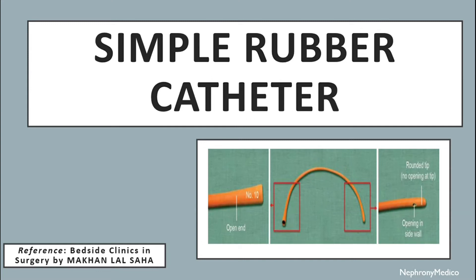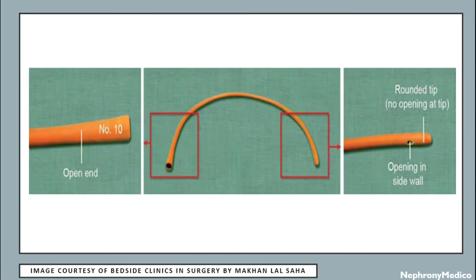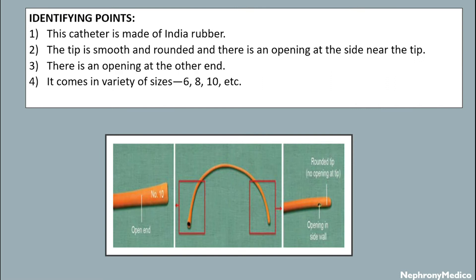Hello and welcome. Let's talk about the simple rubber catheter. This is a picture showing a simple rubber catheter and its identifying points. This catheter is made of India rubber. The tip is smooth and rounded, and there is an opening at the side near the tip, as well as an opening at the other end. It comes in a variety of sizes: 6, 8, 10, and so on.